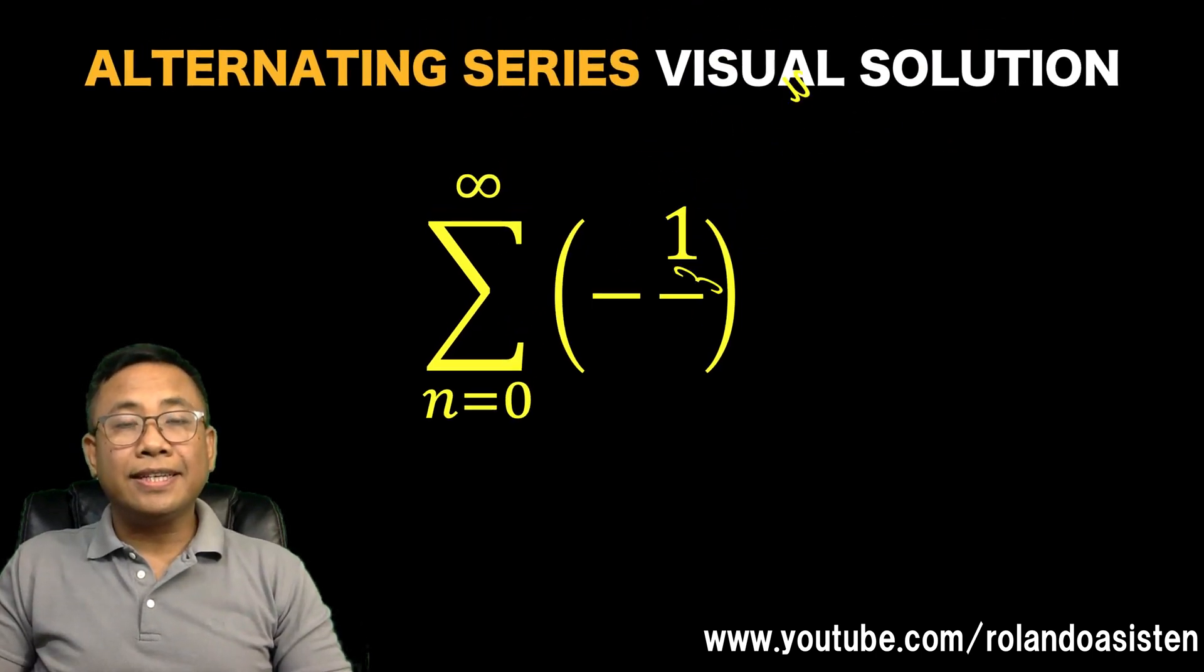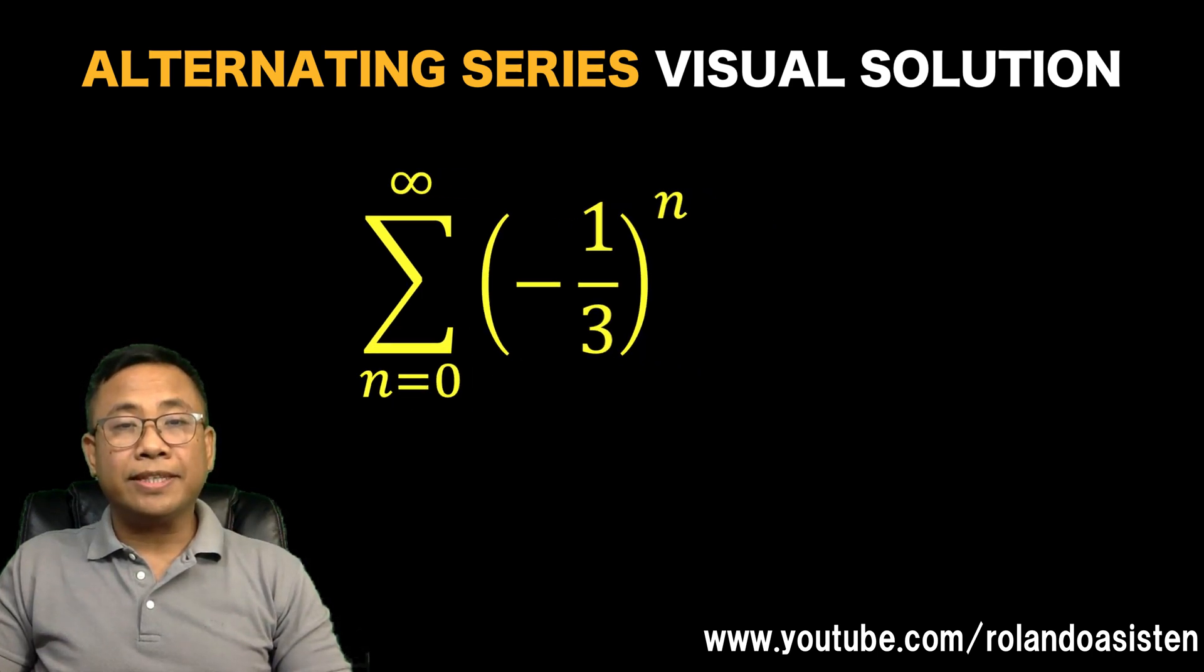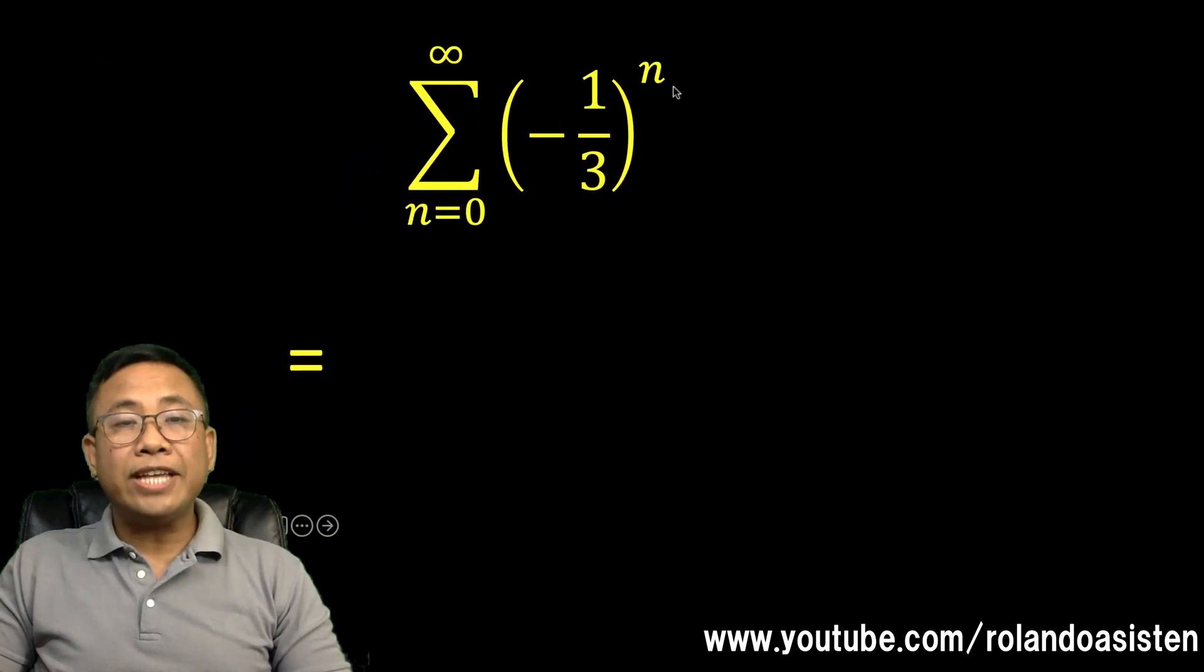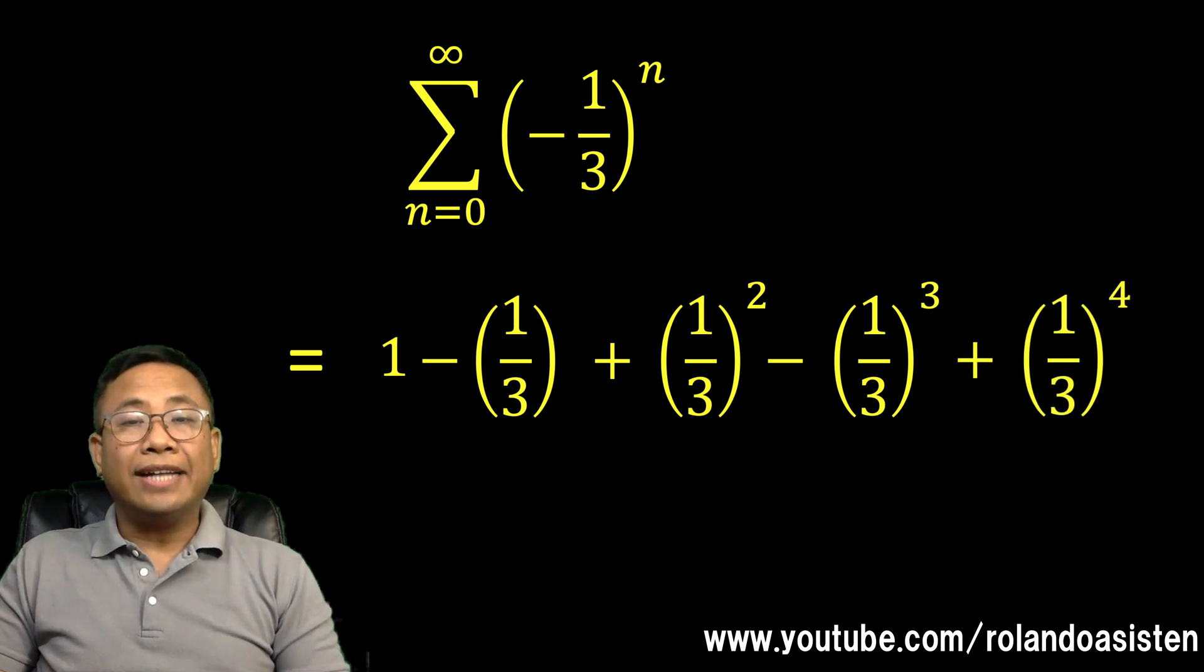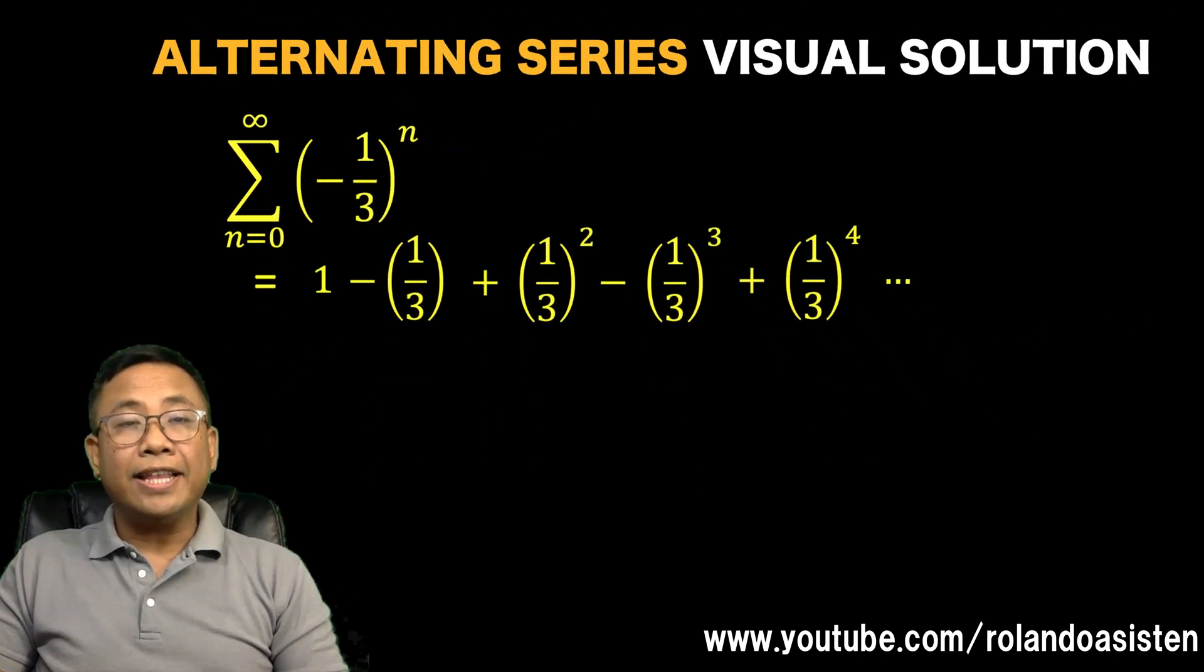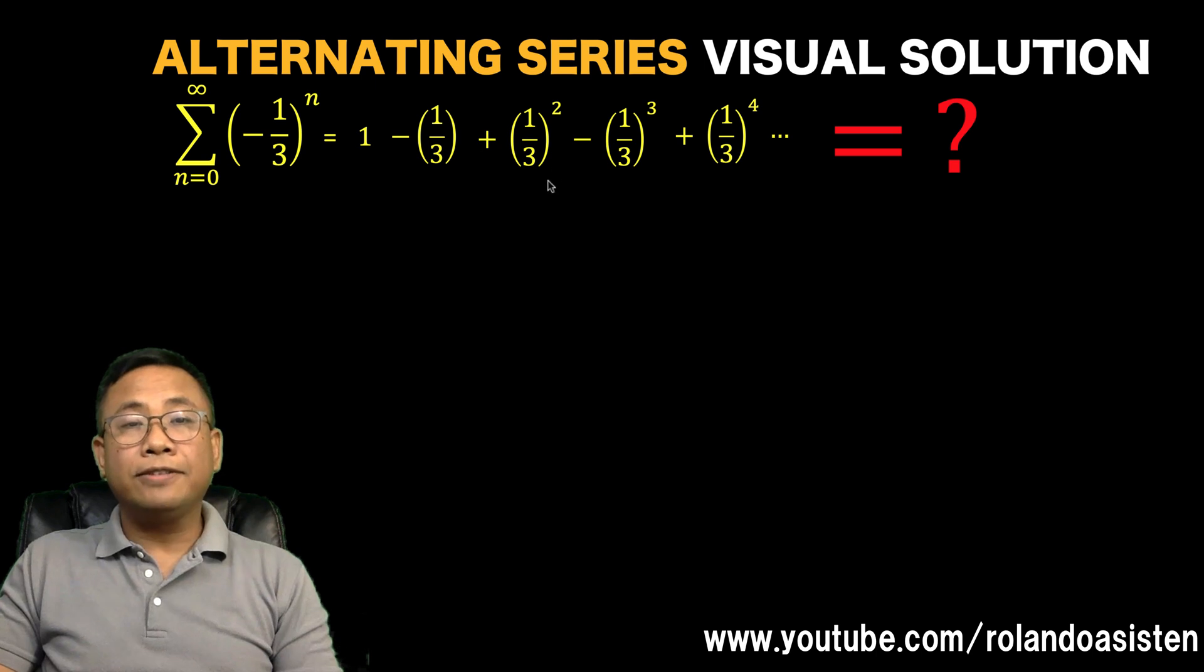Let's say we are given this series: the sum of (-1/3)^n, n from 0 to infinity. Let's look at some of the terms. If n equals 0, (-1/3)^0 is 1. If n is 1, we have -1/3. If n is 2, we have (-1/3)^2, which is positive 1/9. If n is 3, we have -1/27, and we continue until infinity. What is the value of this alternating series? We call this alternating series because we alternate from positive to negative to positive to negative, and so on.